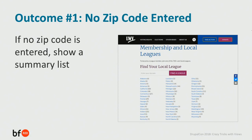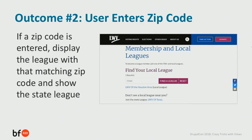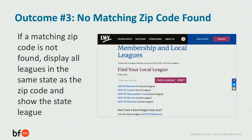The second required outcome is if a user does enter a zip code, display the local league that matches that zip code and show the state league. The third required outcome is if a user enters a zip code but there is no matching local league, then display all of the local leagues in the same state as the zip code entered, as well as display the state league.